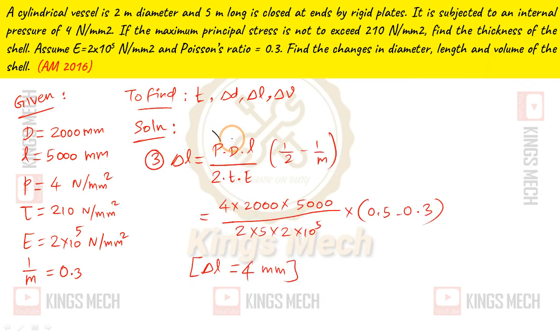Change in length δL = PDL/(2tE) × (1/2 - 1/m). 1/2 - 1/m = 0.5 - 0.3 = 0.2. Length, diameter, pressure multiplied, divided by 2 into thickness into Young's modulus. The answer: δL = 4 mm.